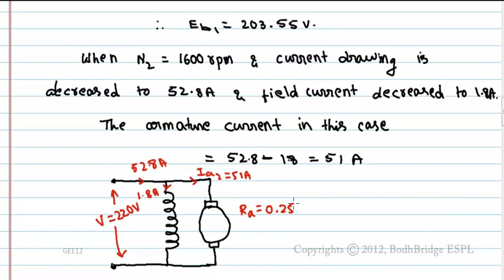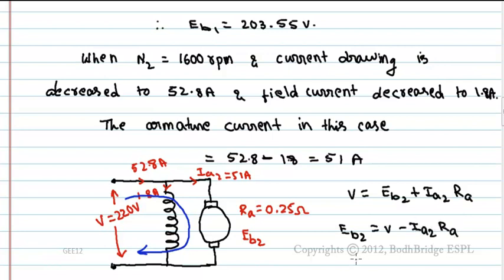So the armature current Ia2 equals 51A. Here Ra is 0.25 Ohm, Eb2. In the same way, by applying KVL to this loop, we get V equals Eb2 plus Ia2 into Ra. Eb2 equals V minus Ia2 into RA, which is 220V minus 51 into 0.25. This equals 207.25V.